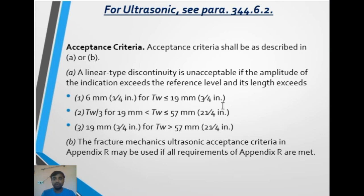For ultrasonic, per para 344.6.2, the acceptance criteria are described as type A or B. For linear type discontinuities: for base metal thickness less than or equal to 19 mm, a discontinuity length of 6 mm is acceptable. For thickness up to 57 mm, the limit is tw/3. For thickness greater than 57 mm, 19 mm is the acceptable limit.